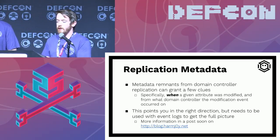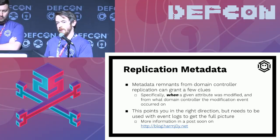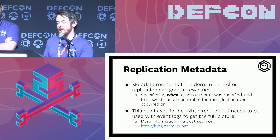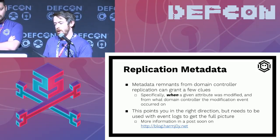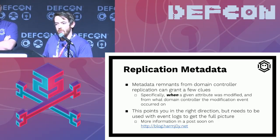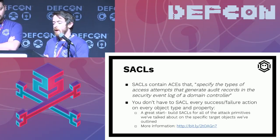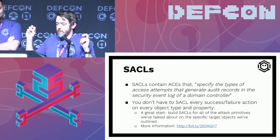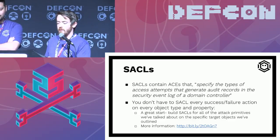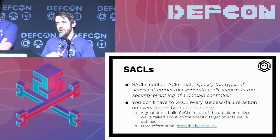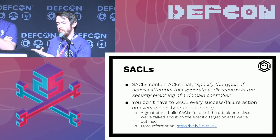Replication metadata remnants from a domain controller are preserved in particular Active Directory properties. In the DC synchronization data there's XML-based metadata you can pull out to find when a given attribute was modified and from which domain controller the modification originated — pointing you in the right direction, though you then have to parse those event logs to identify who made the change. Also, SACLs — system access control lists that specify types of access attempts to generate audit records in the security event log. SACLs have been around forever but people don't use them because they generate enormous event volume. If you implement SACLs just for the object takeover primitives we covered, you can cut down the noise by orders of magnitude.